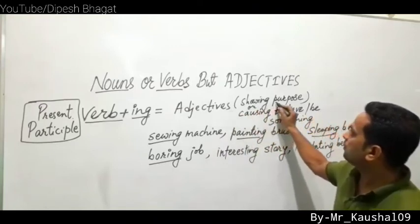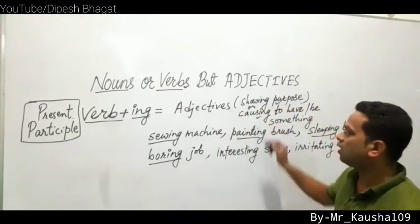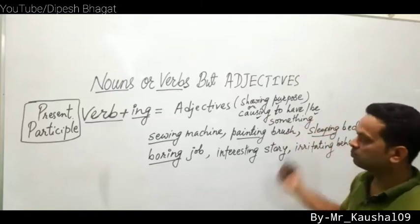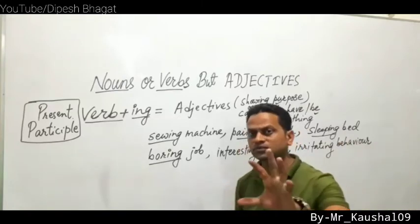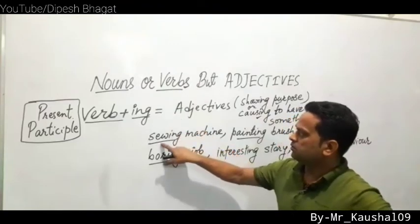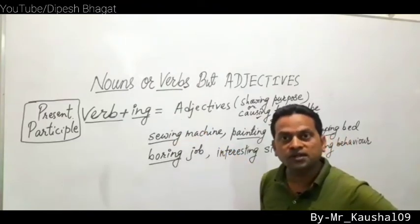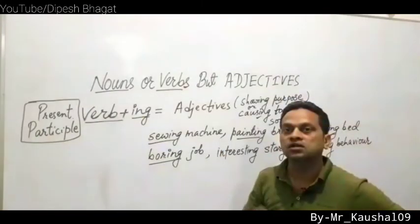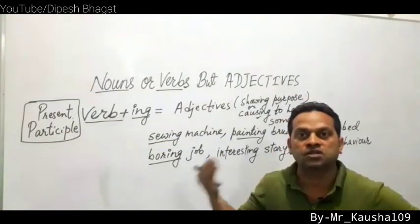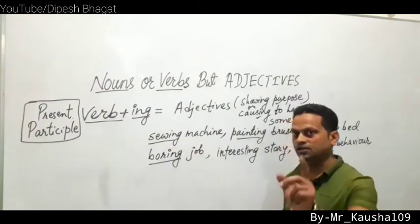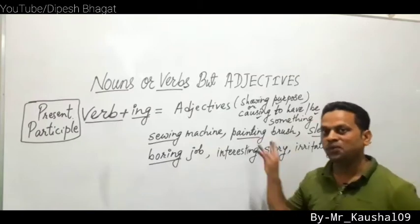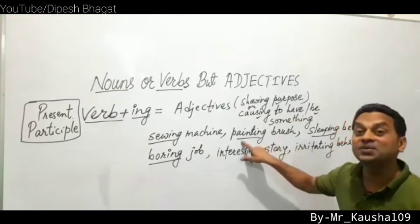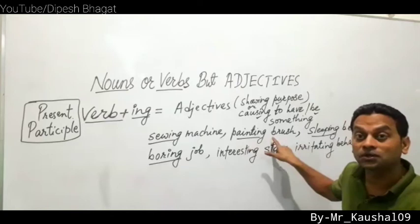For example: 'sewing machine' — sewing is the purpose of the machine, so 'sewing' is an adjective here. 'Painting brush' — the purpose of the brush is painting, so 'painting' is an adjective. 'Sleeping bag' or 'sleeping bed' — the purpose of the bed is sleeping, so 'sleeping' is an adjective.